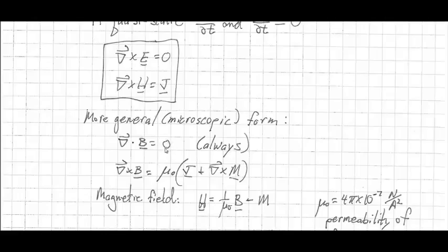The other equation is curl of that, curl of your B field equals permeability of free space, your current density, and the curl of a magnetization.